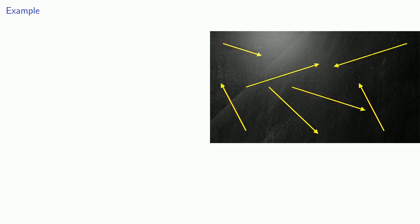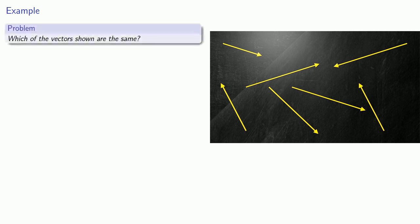If a vector is a directed distance, then we can represent it using an arrow, with the direction of the arrow showing the direction of the vector and the length of the arrow showing the distance. The first thing we might want to do with a new type of object is ask when two of these things are the same — since a vector has both a direction and a distance, we want vectors whose directions and distances match.